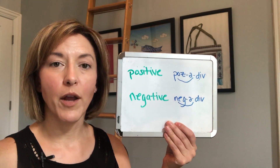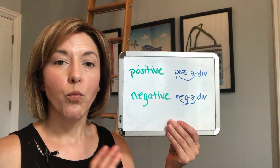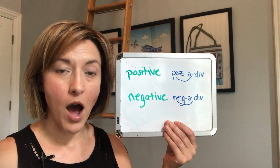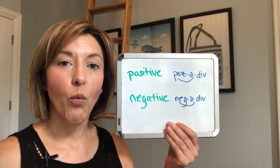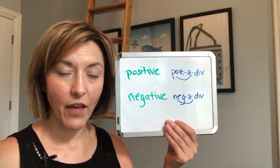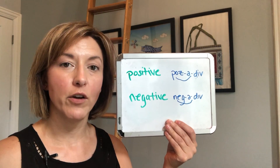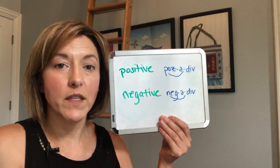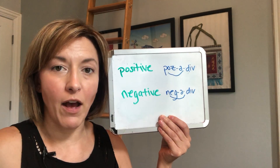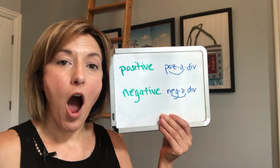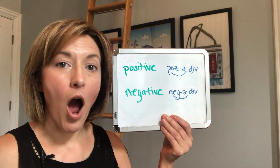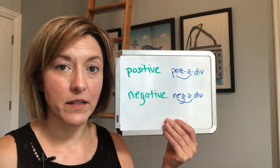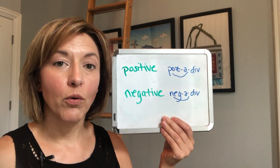Let's start with word number one: 'positive.' To say this word correctly, start by saying 'pause.' To do that, have your lips together for the P, then open very wide into an oval mouth shape with the tongue in the bottom of your mouth for that 'ah' sound. That gives you 'pause.'